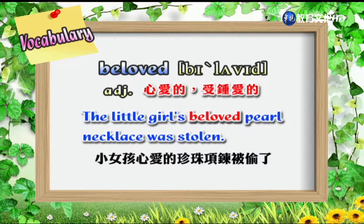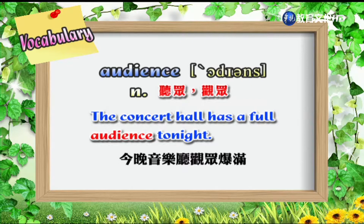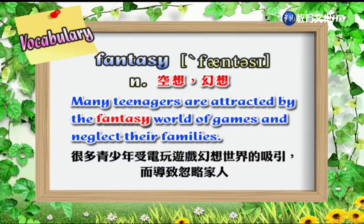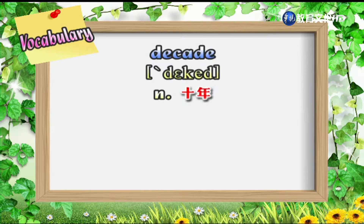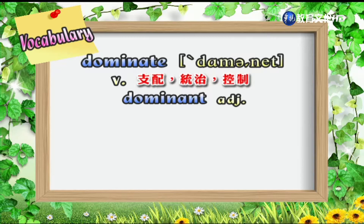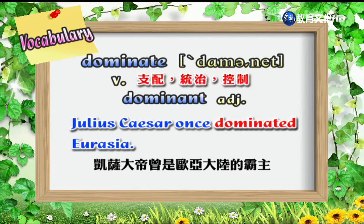Beloved — 形容词，心爱的、钟爱的。 The little girl's beloved pearl necklace was stolen. 小女孩心爱的珍珠项链被偷了。 Audience — 名词，听众、观众。 The concert hall has a full audience tonight. 今天晚上的音乐厅观众大爆满。 Fantasy — 名词，空想、幻想。 Many teenagers are attracted by the fantasy world of games and neglect their families. 许多青少年受电玩游戏的幻想世界所吸引而导致忽略到家人。 Decade — 名词，十年。 Social network websites like Facebook have been around for over a decade. 社群网站如 Facebook 已经成立超过了十年了。 Dominate — 动词，支配、统治。 Julius Caesar once dominated Eurasia. 凯撒大帝曾是欧亚大陆的霸主。